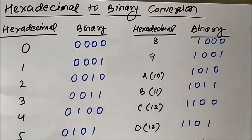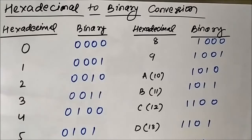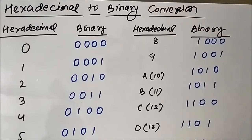Hello friends, welcome to Engineering Tutorial. In today's video we are going to study about hexadecimal to binary conversion technique, or how to convert a hexadecimal number having a base of 16 into its equivalent binary or base-2 form. Similar to what we did in octal to binary and binary to octal conversion, first we have to establish a relationship between each of the digits of the hexadecimal and binary number systems.